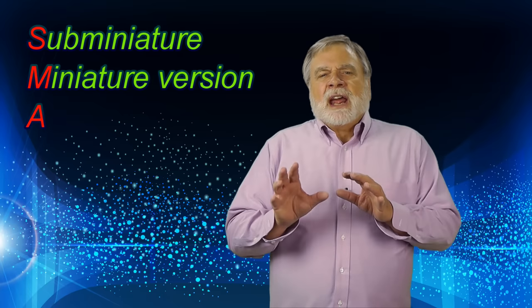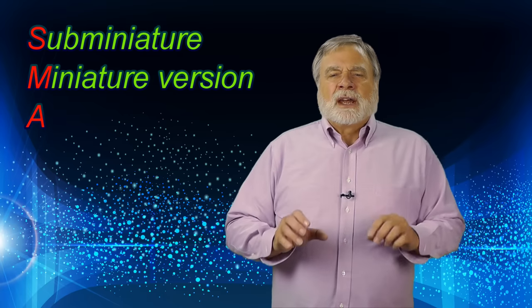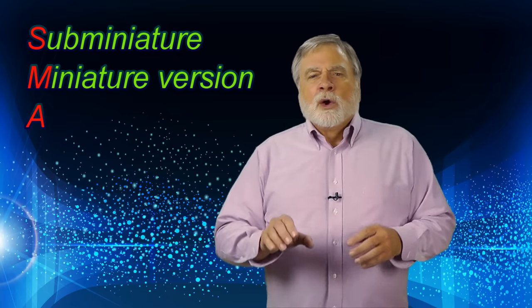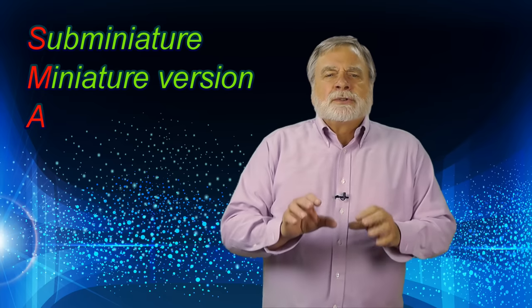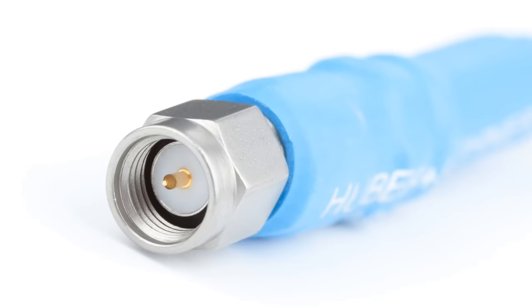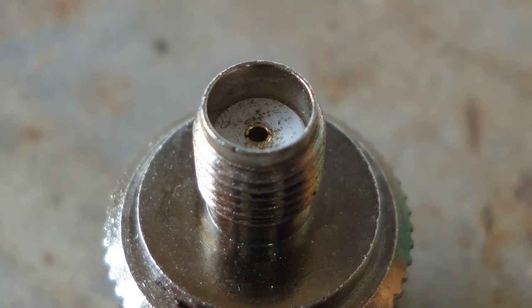Let's look at the next most commonly used connector, the SMA, or sub-miniature version A. Like the BNC, these are used for lower power. The photo you see here from Wikipedia shows a standard male SMA connector. It threads over the female connector, and you can see that there's a pin in the middle that will go into the female socket. And here is a female SMA connector.